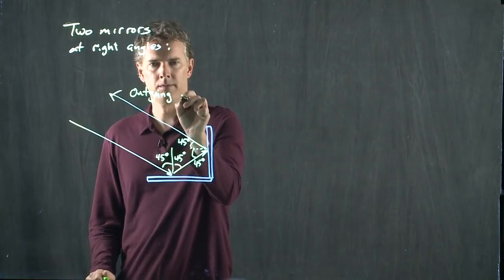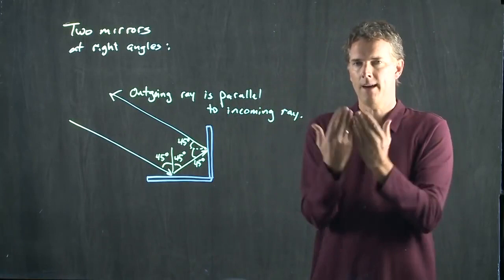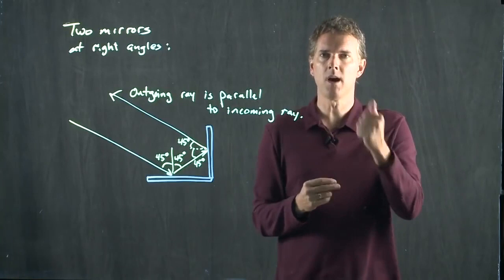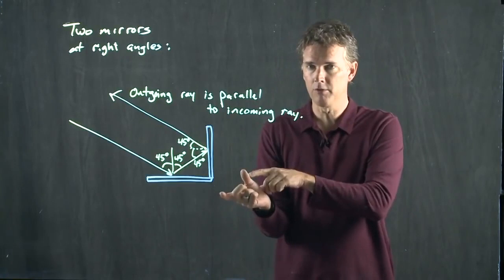You might have seen these before. They have these in dressing rooms, and the reason that they put these in dressing rooms sometimes is so that you can see your reflection the way other people see it. The bounce off the first mirror flips you from left to right. The bounce off the second mirror flips you back right to left.